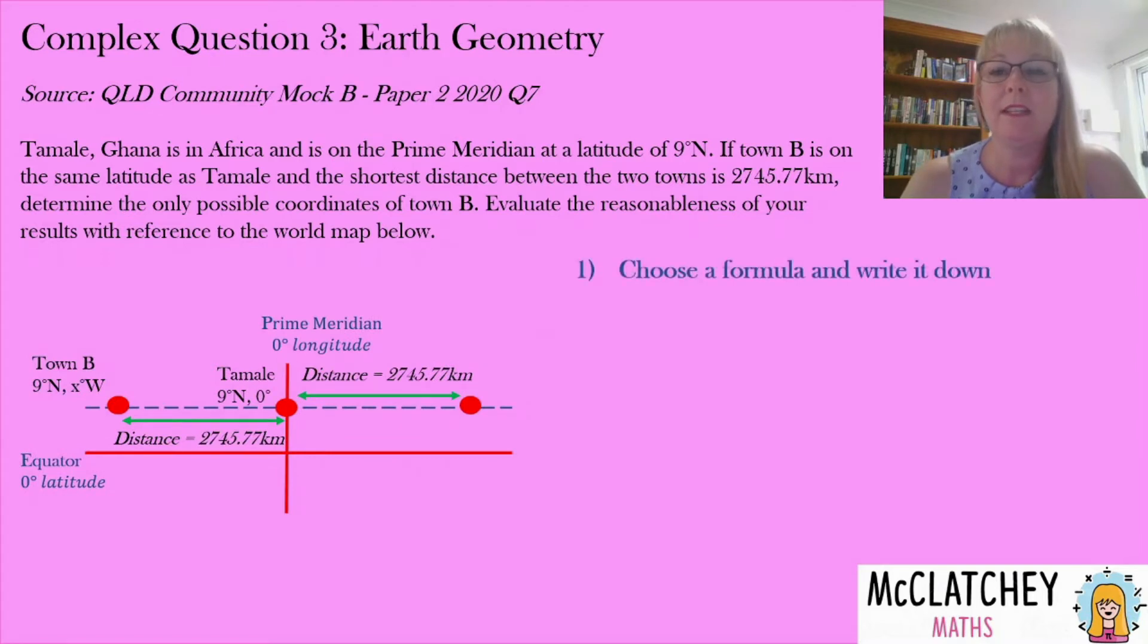Okay so let's move that to the left and choose a formula and write it down. Well we know we've got that common latitude for Tamale and town B. That means we are going to choose our formula from our formula sheet with the cosine in it. Now it took me a long time to work out a way to remember this and the way that I remember it is that the word trigonometry has two t's in it. T for trigonometry for the second t. Latitude also has two t's in it. Latitude. So that's the way I remember to use this particular formula.